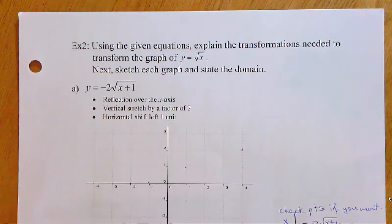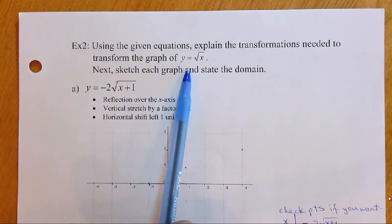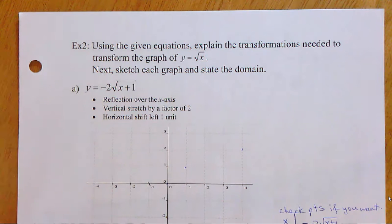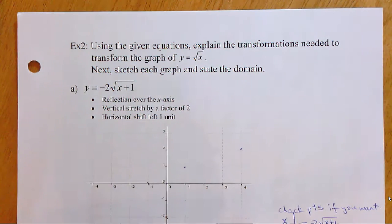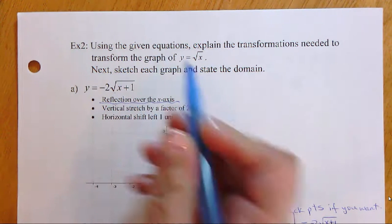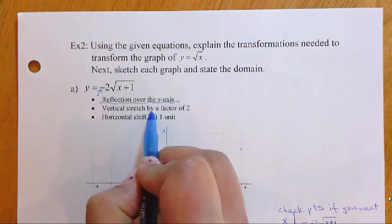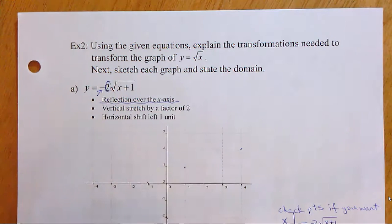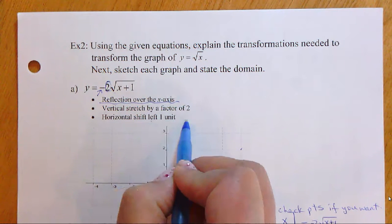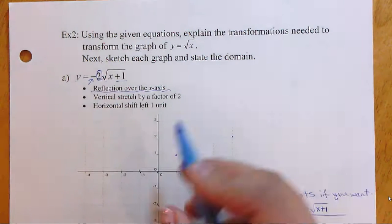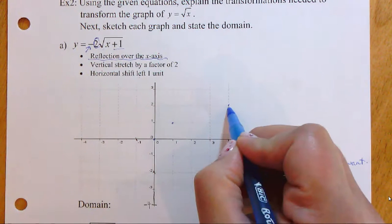In this example, we're going to explain the transformations needed to transform y equals square root of x, then sketch each graph and state the domain. There's a reflection over the x-axis caused by the negative sign, a vertical stretch by a factor of two caused by the coefficient 2, and a horizontal shift left one unit caused by the +1 inside the radicand.